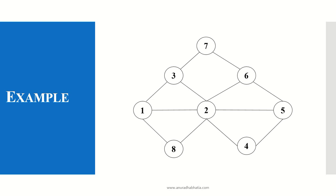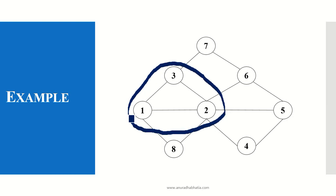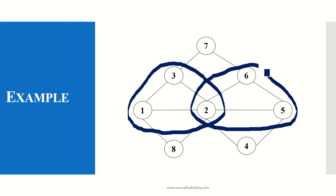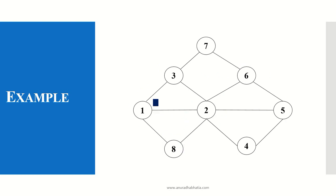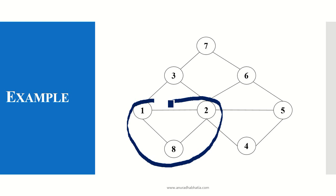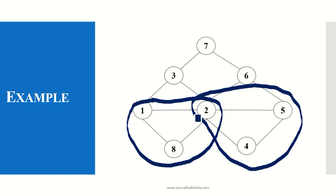Starting with k equals 3, let us see how many cliques can be formed. Starting by combining nodes 1, 2, and 3, this is clique number 1. This is clique number 2. I am taking only 3 nodes at a time because my value of k is 3. These are 2 cliques so far. Next, the 3rd clique is formed here, and the 4th clique can also be formed. No more cliques can be formed because k equals 3, so with k equals 3, I can form 4 cliques.